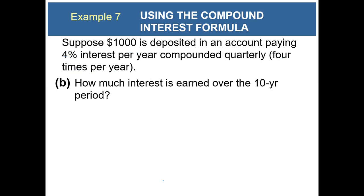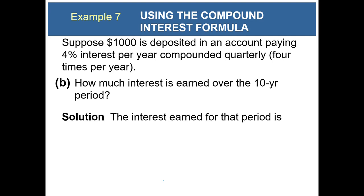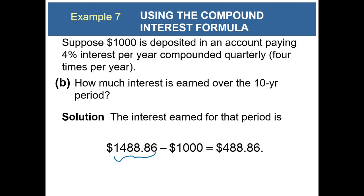Part B: how much interest is earned over the 10-year period? The interest earned is $1,488.86 minus the principal of $1,000, which equals $488.86 of interest earned.